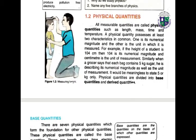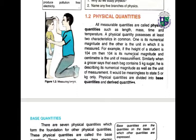Physical quantities are all measurable quantities — we can easily measure them. For example: length, height, mass, time, and temperature. For example, if the height of a student is 104 cm, then 104 is the numerical magnitude and cm is the unit of measurement.